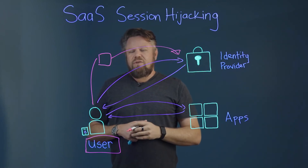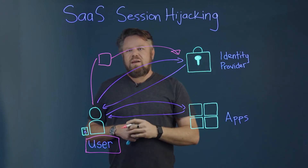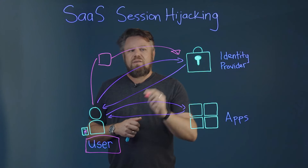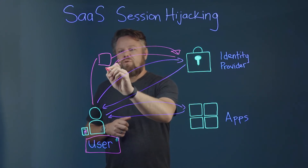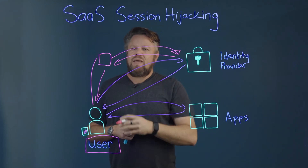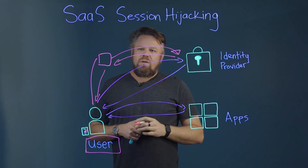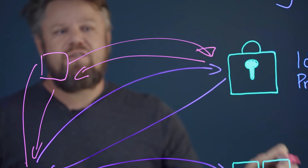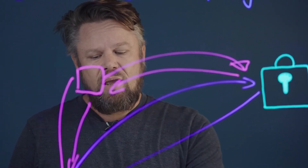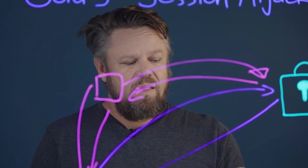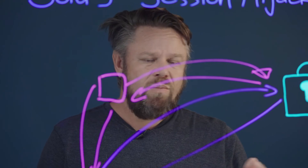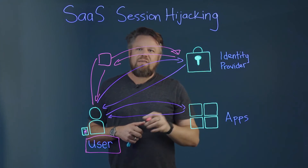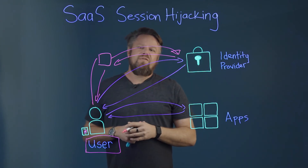You might think that MFA saves you in this situation — it doesn't. Because the user is proxied through, when the identity provider pushes the MFA, the user is still going to accept it, saying yes, they want access. But now that session travels through the attacker's infrastructure and gives them access to the entire environment. If the attacker steals the token to the identity provider, they might have access to every application — though this may only last a few hours. If they steal the token to the application, they have access to that application for 30 days, 14 days, or seven days, allowing them to maintain access and avoid all the complications of MFA and SSO.